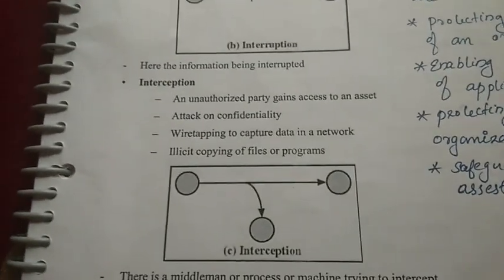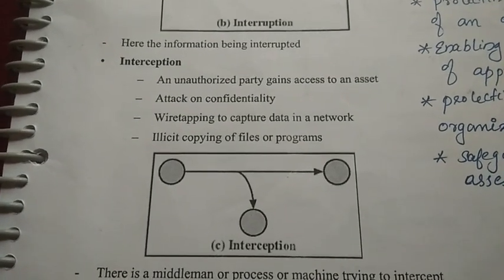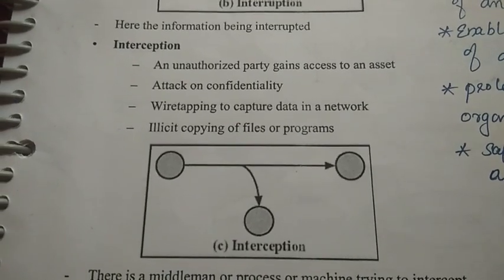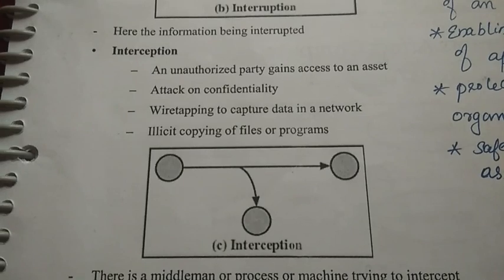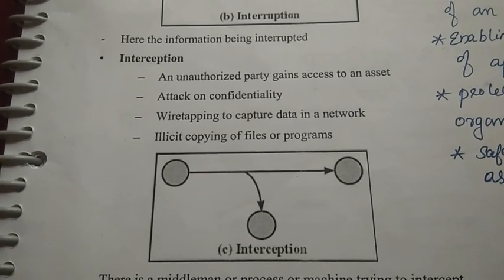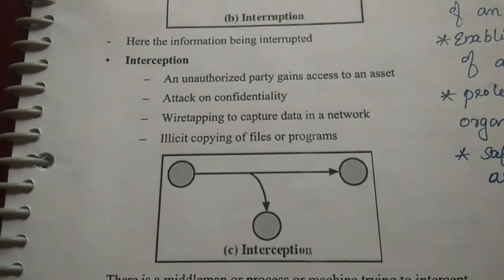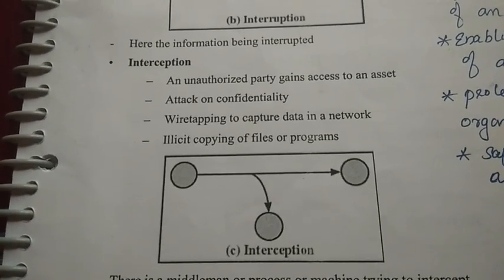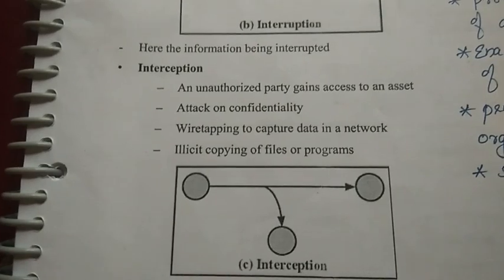The second type is Interception. Interception means an unauthorized party gains access to an asset. Unauthorized party gaining access to an asset is an attack on Confidentiality.